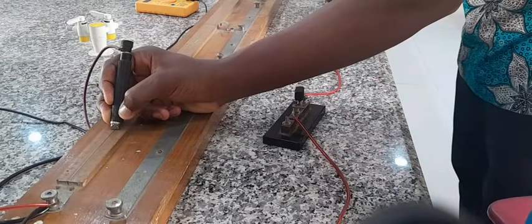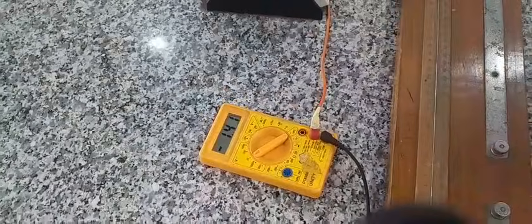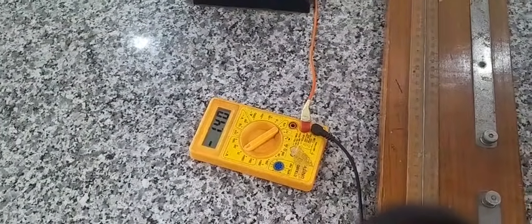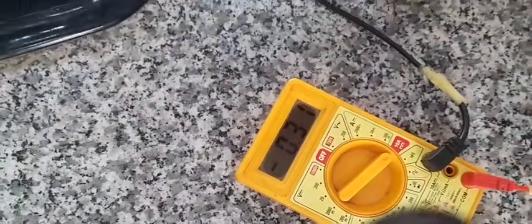And the voltmeter reading? The voltmeter reading is 1.40 and the ammeter reading is 0.31. So we're going to remove the key. Always ensure you remove the key when you're not taking readings. The voltmeter reading is 1.40 and the ammeter reading was 0.31.